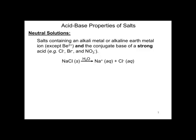Let's look at the acid base properties of salts. Salt solutions can be neutral, acidic, or basic. Neutral solutions occur when salts containing an alkali metal or alkaline earth metal, group one or group two, except for beryllium, and the conjugate base of a strong acid like chloride, bromide, or nitrate. So for example, sodium chloride forms sodium ion and chloride ion, and that's a neutral solution.